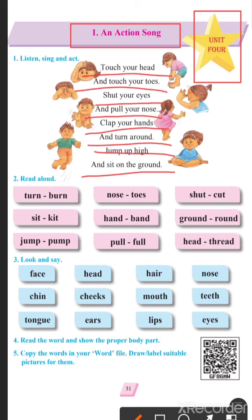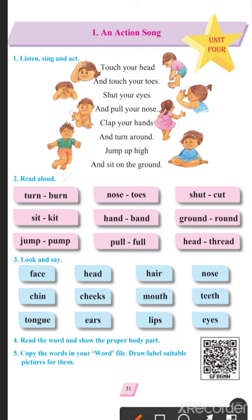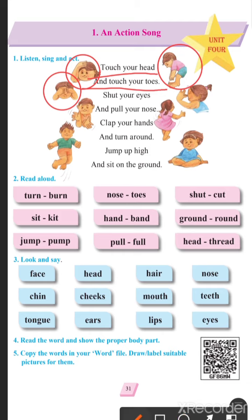Ok students, here from the picture itself you can see the boys and girls are doing some action. For example, what is the first one doing here? She is touching her head. And what is this boy doing here? Touch your toes — he is touching his toe. What is the next one? Shut your eyes — shut your eyes means close your eyes. He is closing his eyes with his hands.